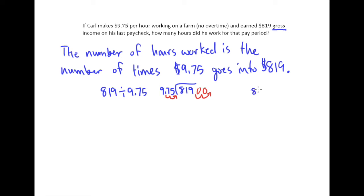This is 819, I'm sorry, 81,900 divided by 975. Okay, so let's look at this.